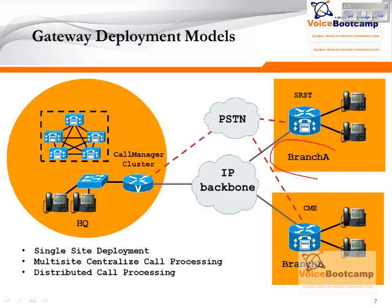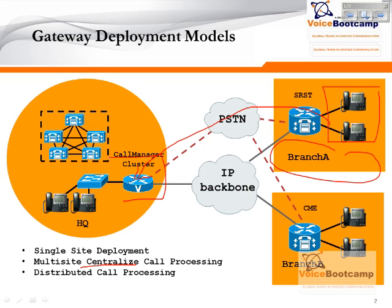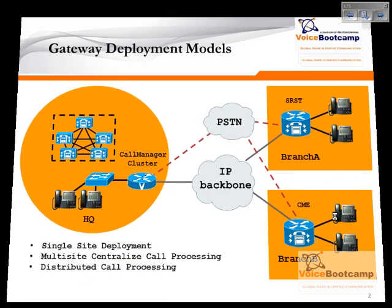Now, you may have a branch office — branch office A — and you may have a couple of phones there that are registered to the gateway in the head office. This is known as multi-site centralized call processing, because even though you have phones in different locations — multiple sites with head office and branch office — the call processing is happening on the gateway located in the head office. Distributed would be where each location has their own call processing device.